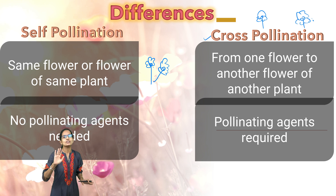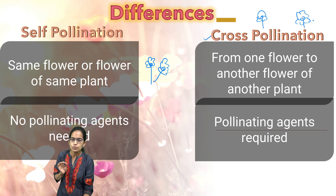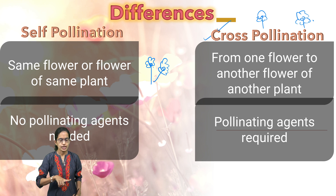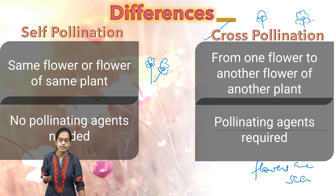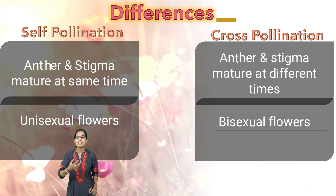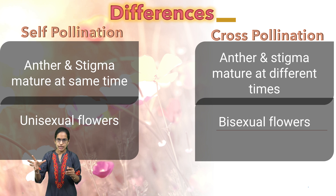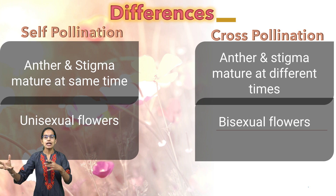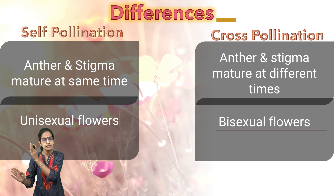Self-pollination does not require any pollinating agent. However, cross-pollination requires pollinating agents, and therefore in cross-pollination the flowers are usually scented — that's one of the major reasons why some flowers are scented. For self-pollination, the anther and the stigma, that is the male and female reproductive parts of the plant, mature at the same time, and therefore self-pollination is possible.